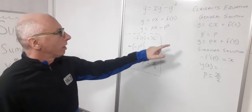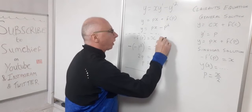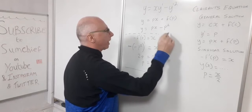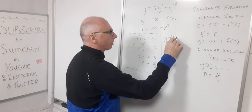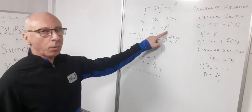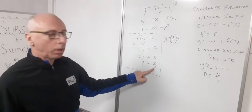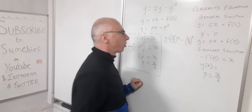So px, well what is our p? Our p is x over 2. So that's x over 2 times x minus p squared. p squared, well x over 2 is our p. So we've got x over 2 squared.